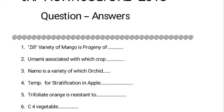C4 vegetables — this is a very common question asked in almost every exam. C4 vegetables include Amaranthus, Bathua, and turnip. Turnip as a C4 plant was also asked in JRF 2016.